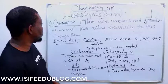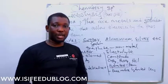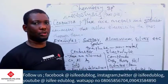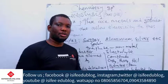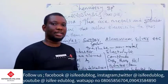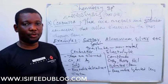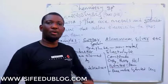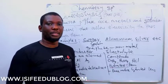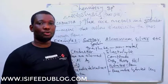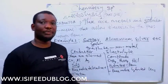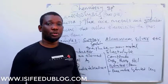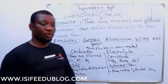A non-conductor, also called an insulator, is a substance that cannot allow currents to flow through it. All non-metals except graphite are non-conductors of electricity. Plastics are also examples of non-conductors.